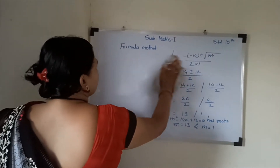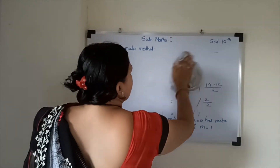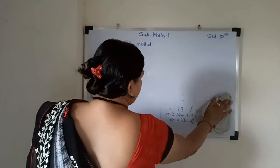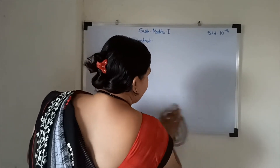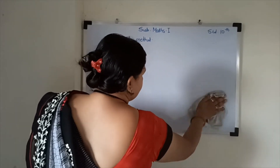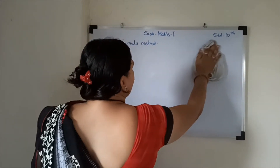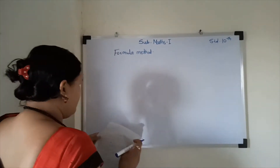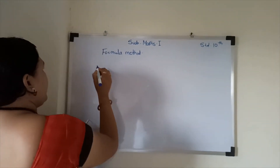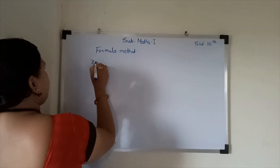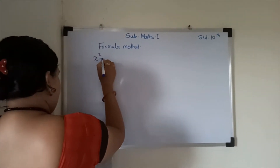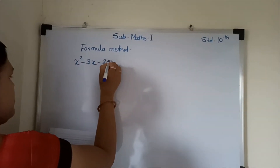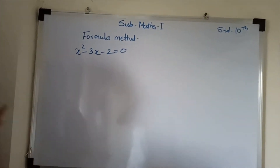There is question 1 in practice set 2.4 where you compare with ax square plus bx plus c and find the values of a, b, c — you can easily solve this. I am taking question number 2. The example is x square minus 3x minus 2 is equal to 0.